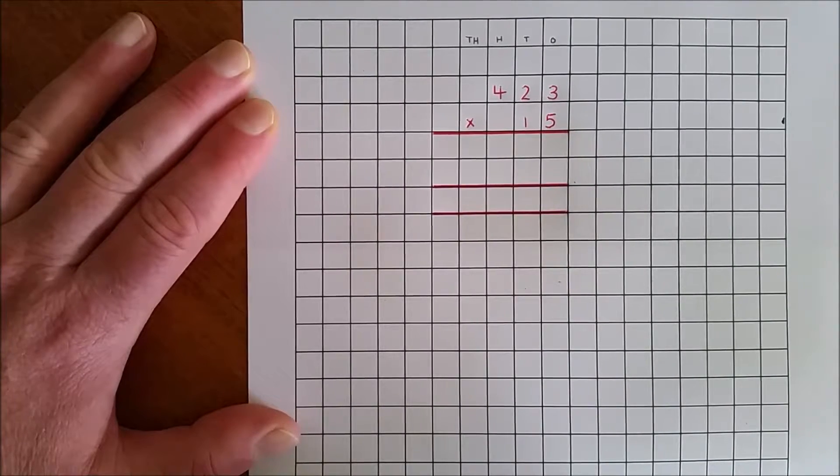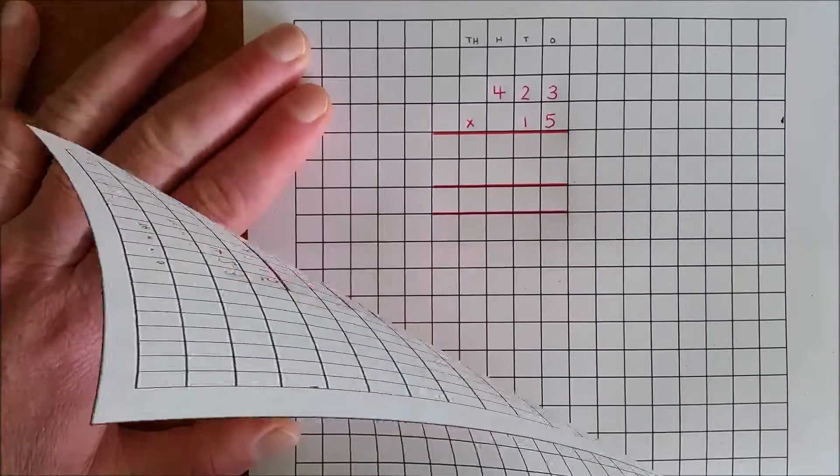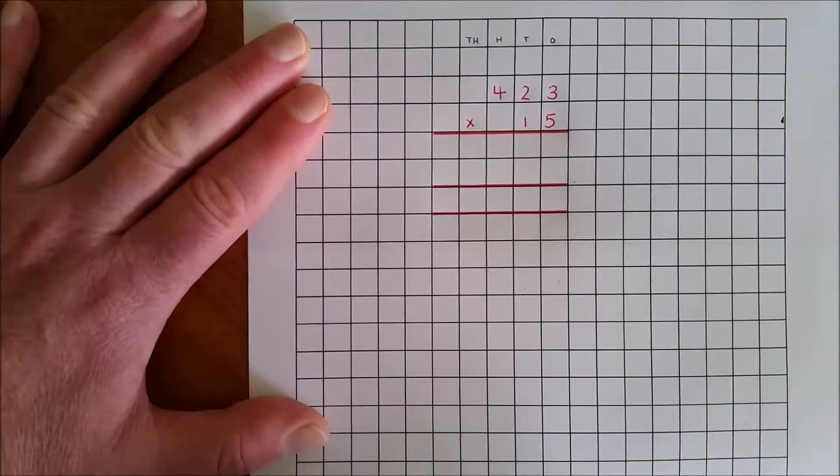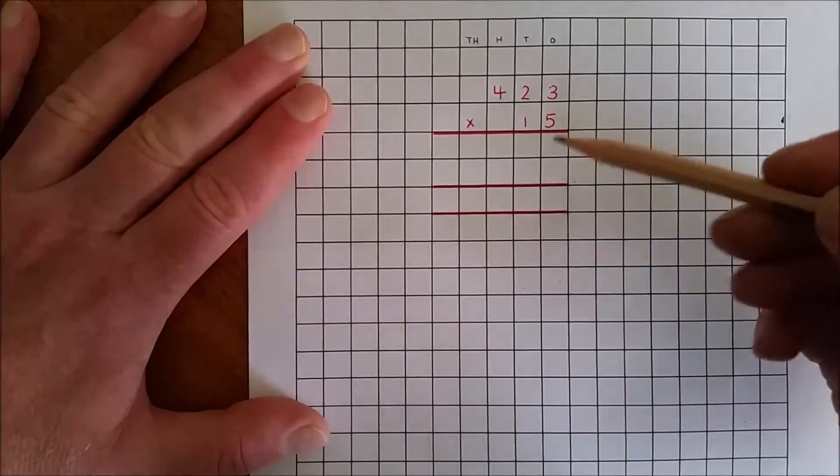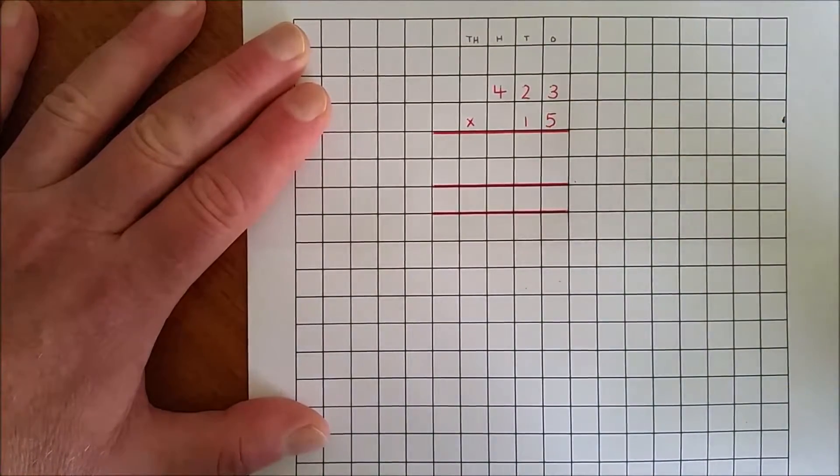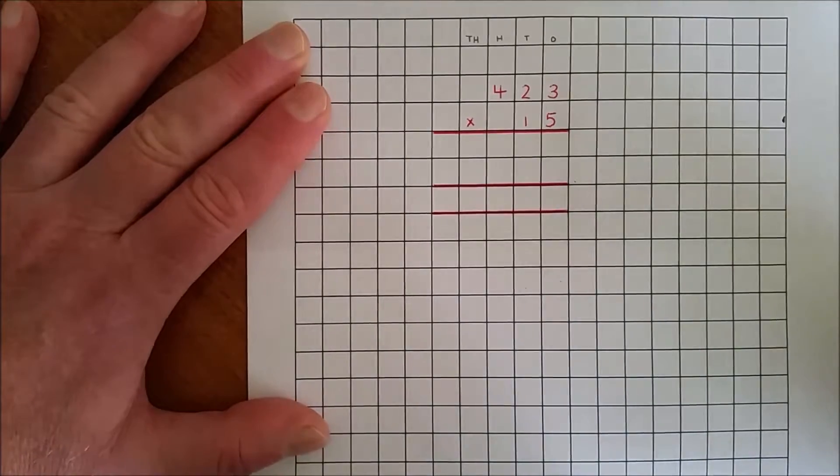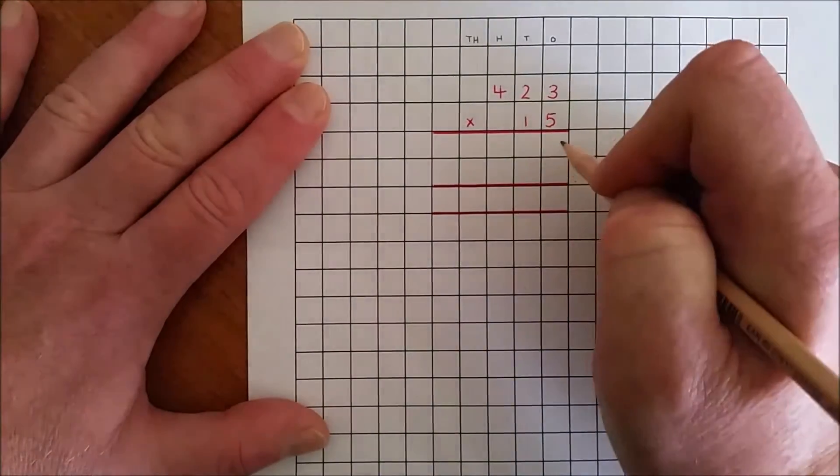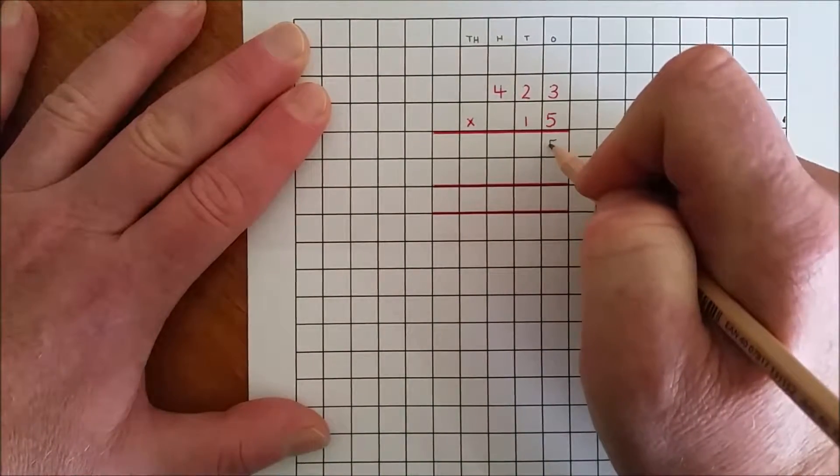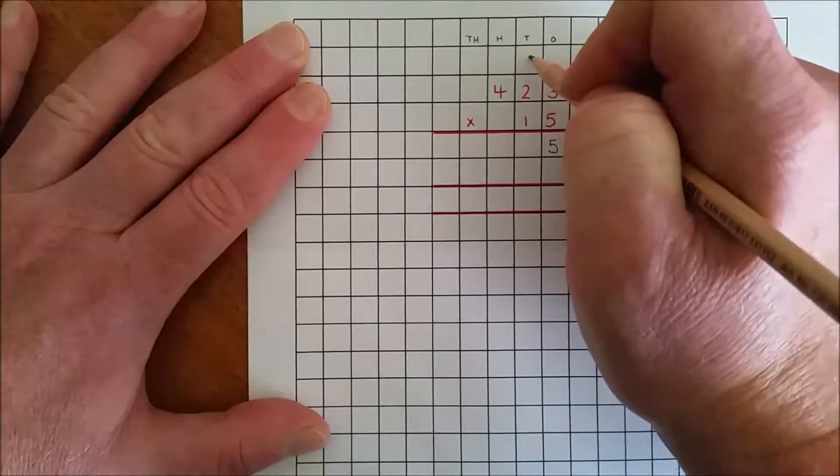I am going to multiply 423 by 15. Multiply the ones. Five by three ones is 15 ones. Rename 15 ones as five ones and one ten.